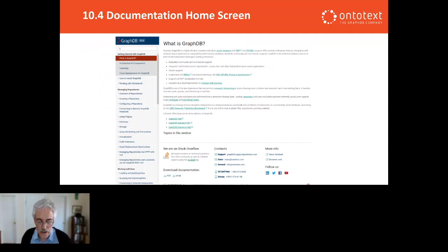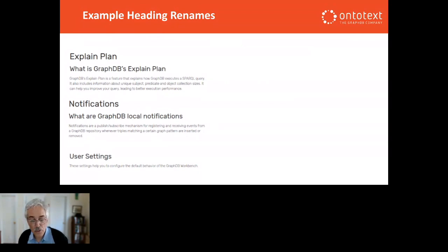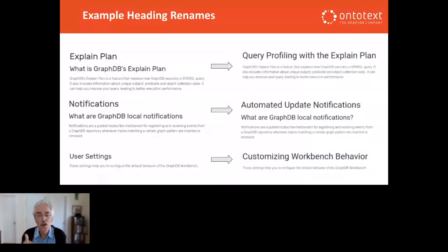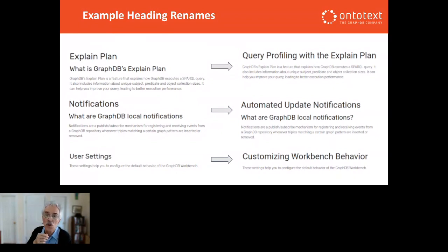We renamed some section headings where we thought it would give users more help to find the content they need. For example, the main headings at the top of each of these three sections announces the existence of an available thing, but doesn't tell you much about the thing until you dig down into the section's contents. The new 10.4 version of each of these headings tells you more about what you can do: query profiling, notification of updates, and user settings to customize the behavior of the workbench. To be honest, this renaming was a bit ad hoc. For the upcoming release 10.5, we're doing a much more comprehensive review of all the headings to identify every single one that might better help users find the explanations they need.